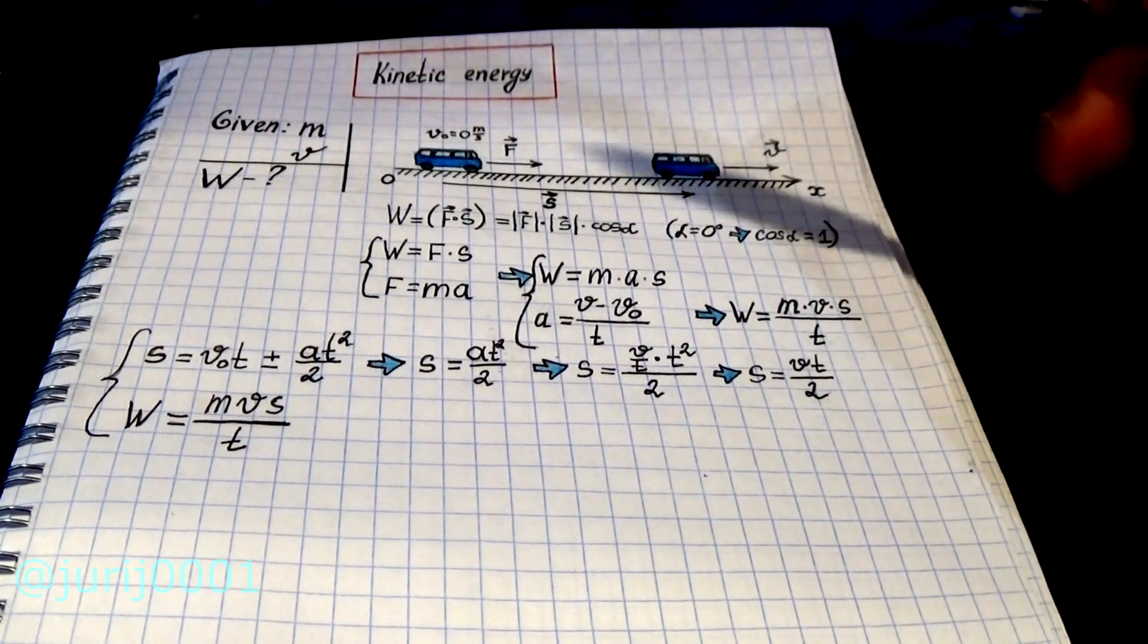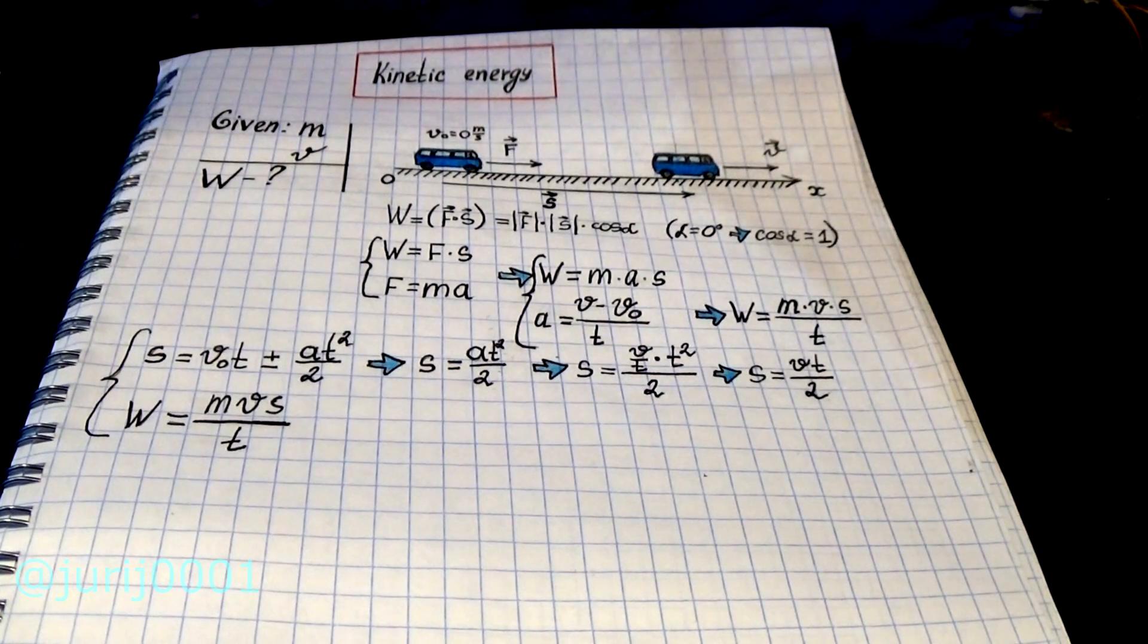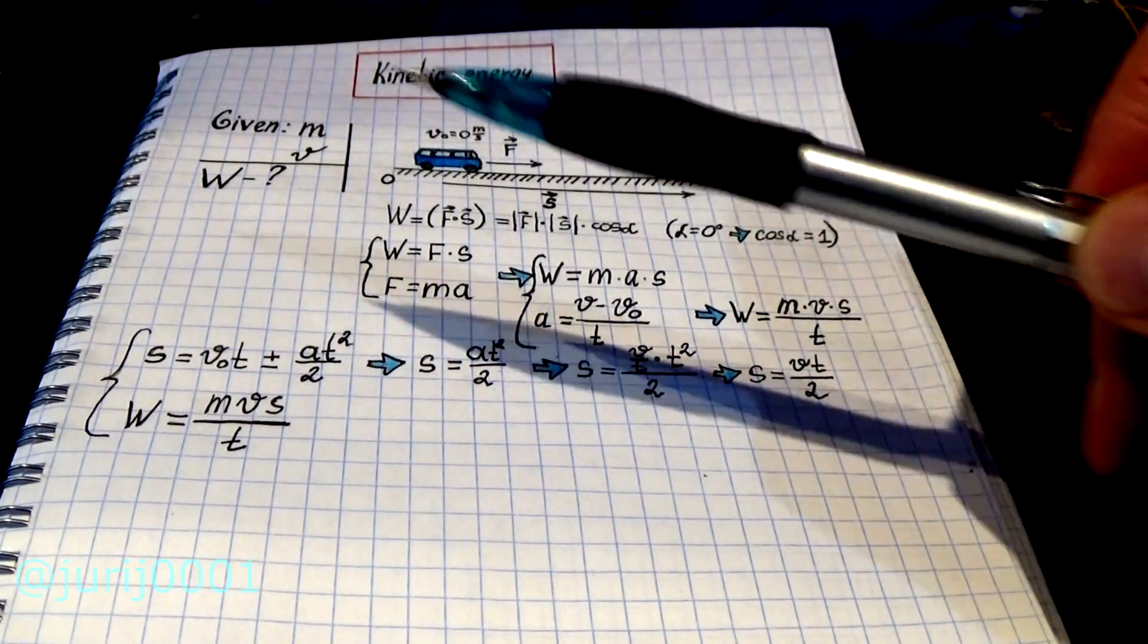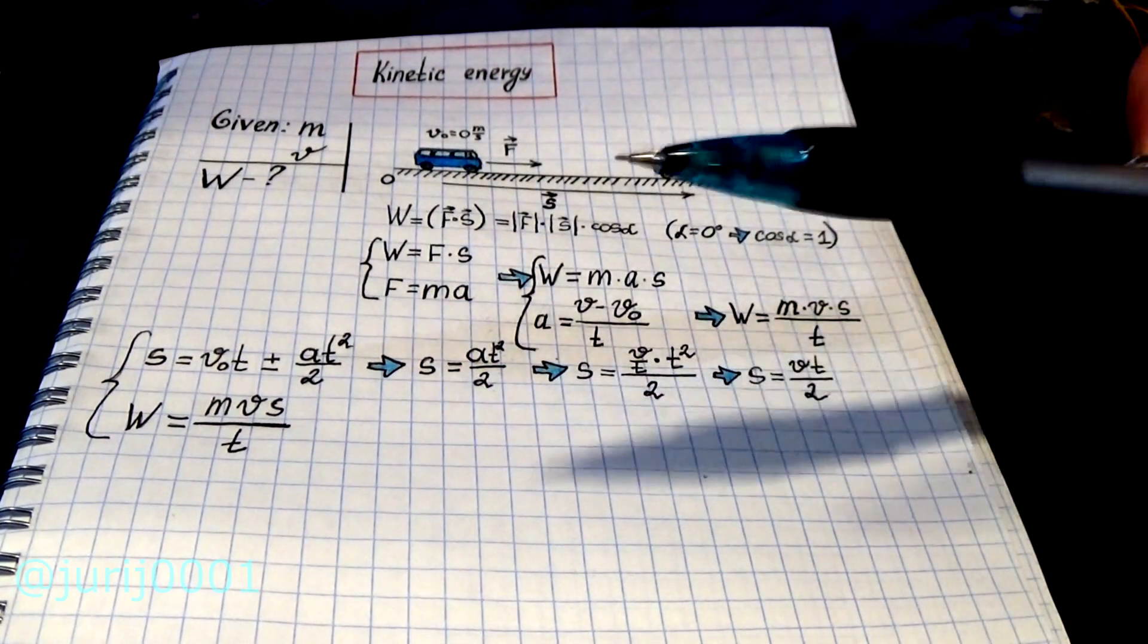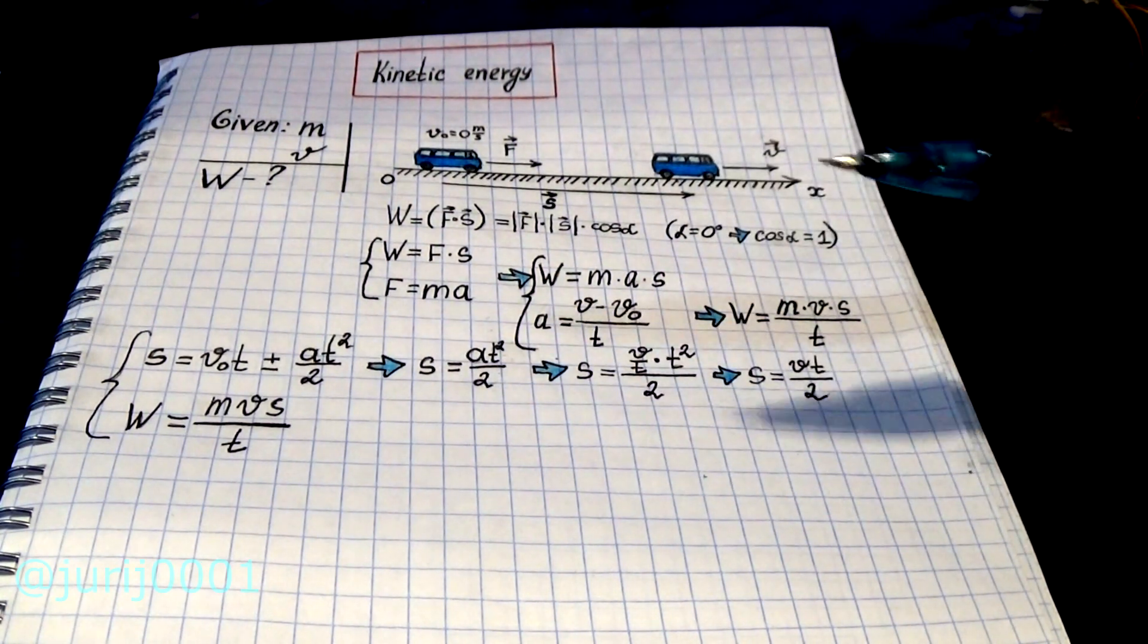Now let's remember how the path length is found for uniformly accelerated motion and take into account the fact that the initial speed is zero. Then the path length will be expressed as half the product of speed and time.